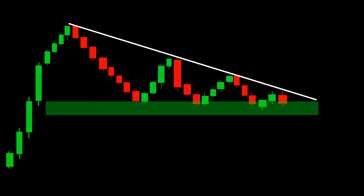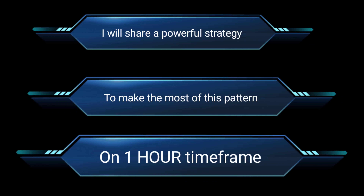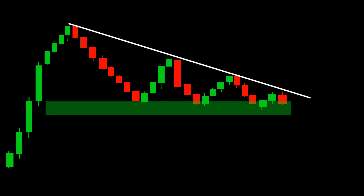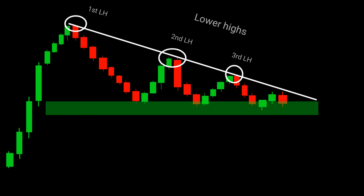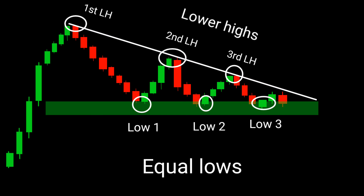The secrets of the descending triangle chart pattern and a powerful strategy to make the most of this pattern on the one-hour time frame. The first secret lies in identifying the descending triangle formation. Look for a series of lower highs and relatively equal lows, creating a downward sloping triangle. This pattern signifies a potential bearish reversal.